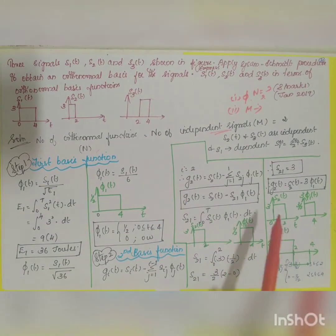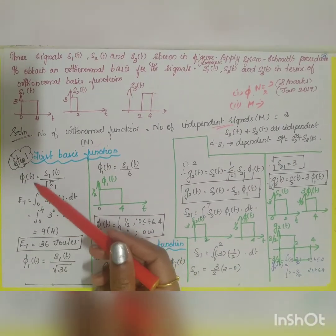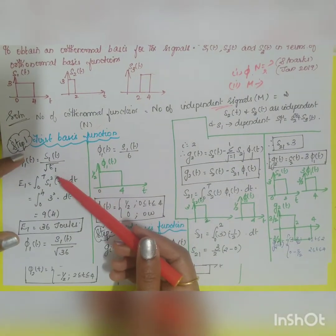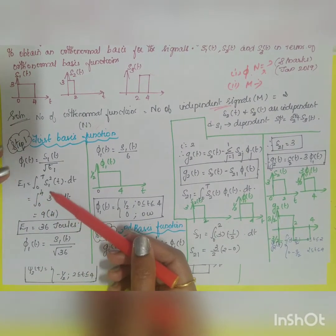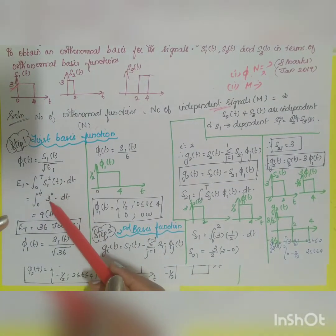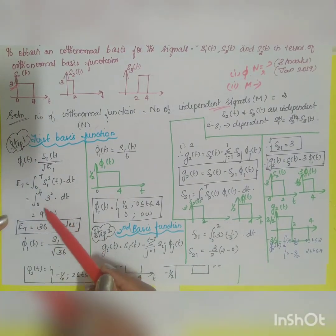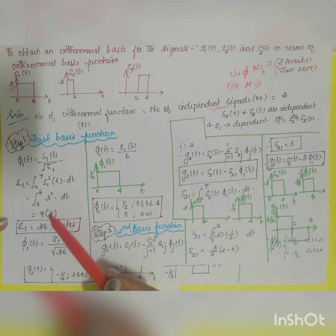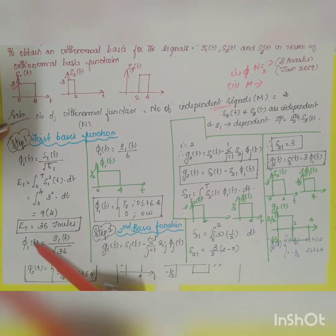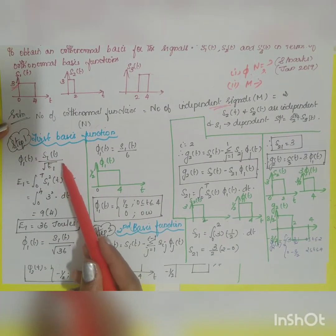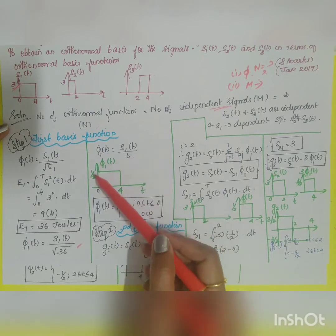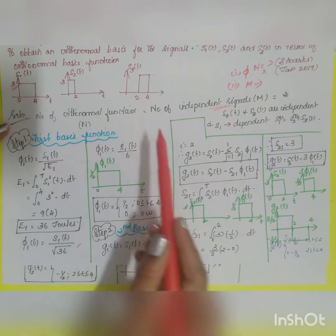We now need to find φ₁(t) and φ₂(t), since φ₃(t) will equal zero. φ₁(t) equals s1(t) divided by the square root of the energy E₁. E₁ = ∫₀⁴ s1²(t) dt. The amplitude of s1 is 3, so s1² = 9. Integrating from 0 to 4 gives 9 × 4 = 36 joules. Therefore φ₁(t) = s1(t) / √36 = s1(t) / 6.